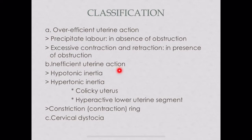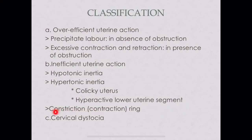Under inefficient uterine action, there are three classifications: hypotonic inertia, hypertonic inertia — which includes colicky uterus and hyperactive lower uterine segment — and constriction ring, also called contraction ring. The third main classification is cervical dystocia.